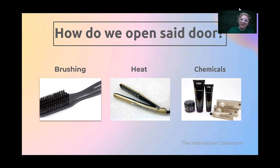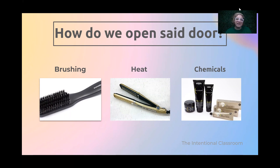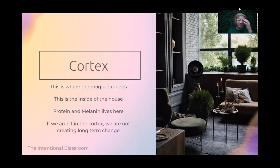Finally, we have chemicals that can open up the door for us. The most common chemical used is ammonia. Ammonia is ammonium thioglycolate from a perm. Ammonia is also found in hair color — it's in the tube of color and opens up the cuticle layer for us. Chemicals are the last way that we really often open up that front door. So remember, the cuticle layer is the front door that brings us into the cortex, the inside of your house.